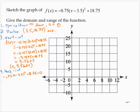I'll subtract the 18.75 and I'll divide by 0.75. So 18.75 divided by 0.75 is 25. So then using the square root property, x minus 3.5 is the positive or negative square root of 25. So x minus 3.5 is positive or negative 5.